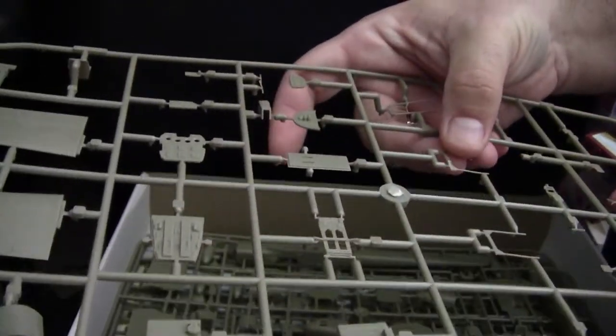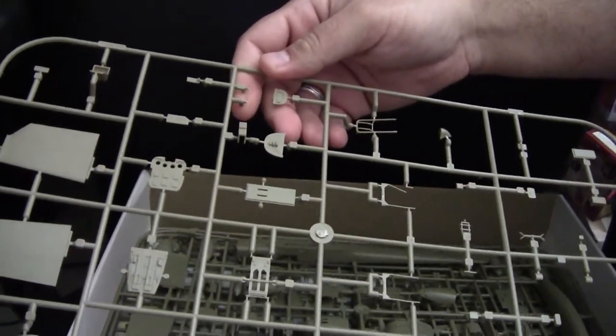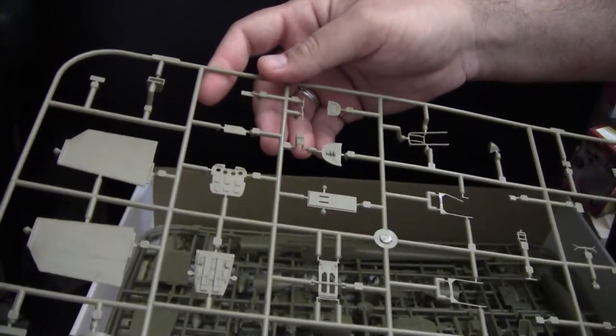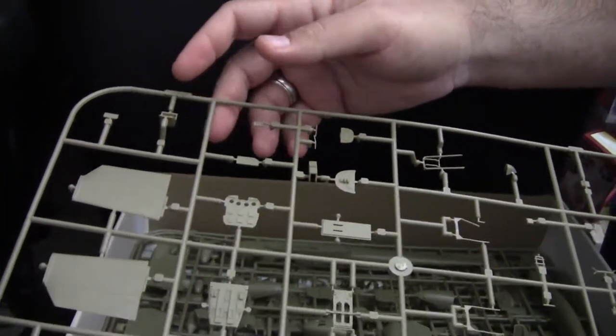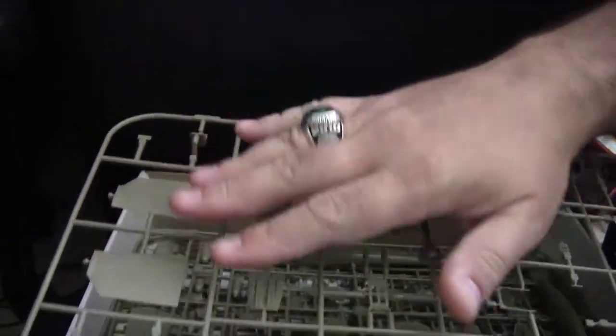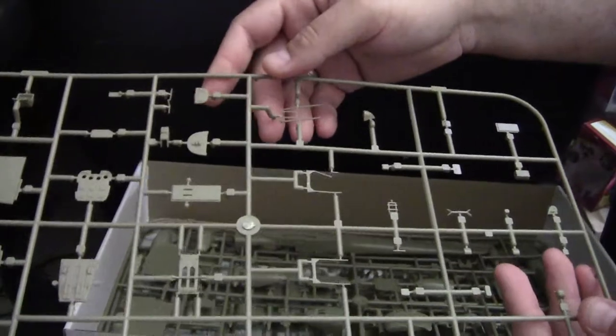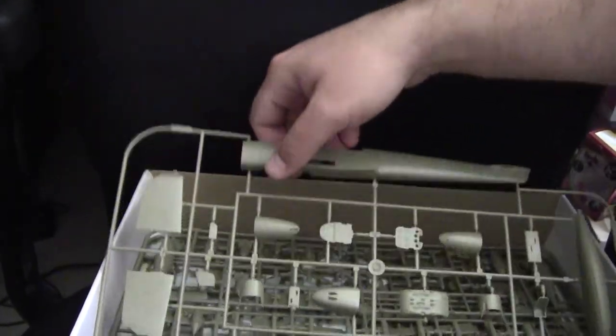Continuing on, more parts for building up the internals of the kit. As well as the cockpit rear gunner. As well as our horizontal tail plane. Not a whole lot to add in regards to this particular sprue. So, carrying on.